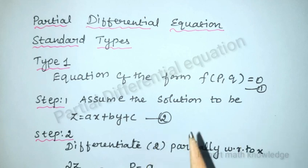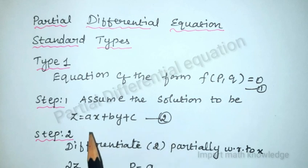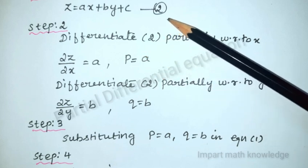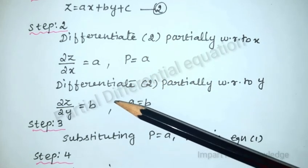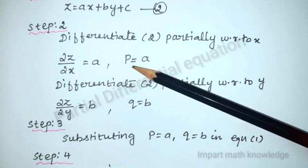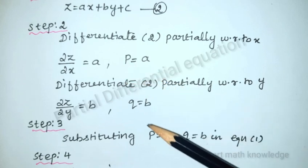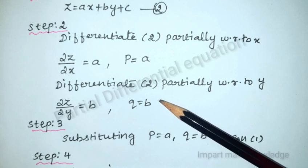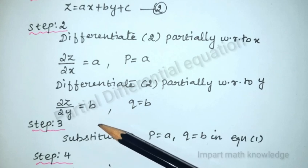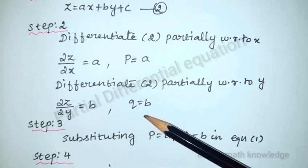The complete solution is a solution which contains an equal number of variables and constants. For finding the complete solution, assume z = ax + by + c. Differentiating partially with respect to x gives dou z / dou x = a, so p = a. Differentiating partially with respect to y gives dou z / dou y = b, so q = b.